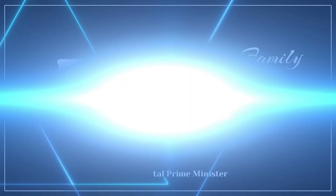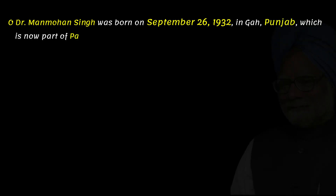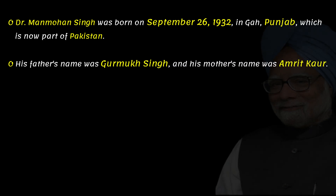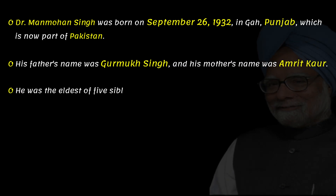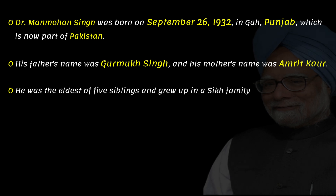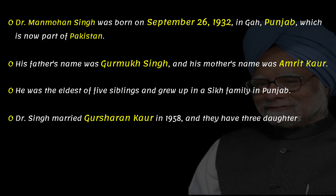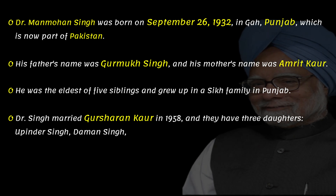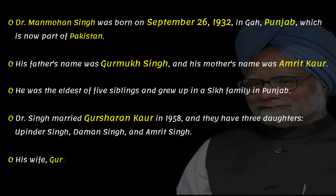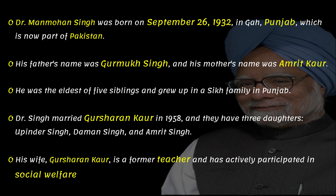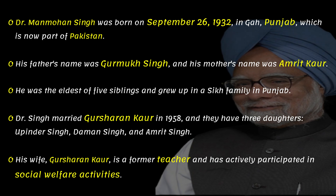Dr. Manmohan Singh was born on September 26, 1932, in Gha, Punjab, which is now part of Pakistan. His father's name was Gurmukh Singh, and his mother's name was Amrit Kaur. He was the eldest of five siblings and grew up in a Sikh family in Punjab. Dr. Singh married Gersharn Kaur in 1958, and they have three daughters: Yupinder Singh, Daman Singh, and Amrit Singh. His wife, Gersharn Kaur, is a former teacher and has actively participated in social welfare activities.